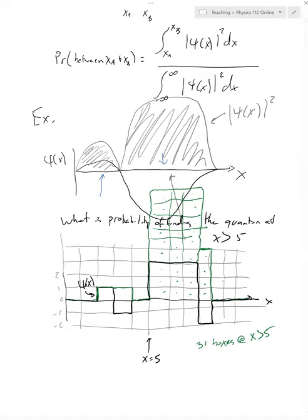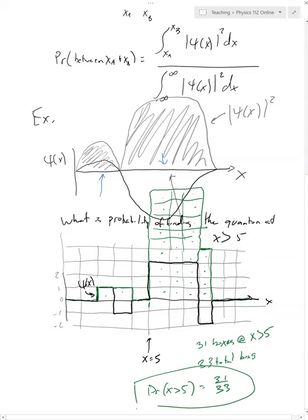All right. But again, we need to divide by the total probability of finding it everywhere. The total probability of finding it everywhere is just the integral of, from minus infinity to infinity. The only thing we have that we haven't included are these two guys here. And so there are 33 total boxes. So the probability of finding it at X greater than five is just equal to 31 over 33, the number of the area under the curve of psi squared greater than five divided by the total number of probability of finding it anywhere.